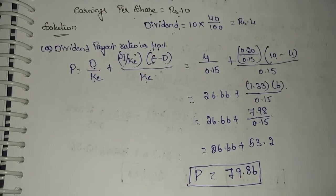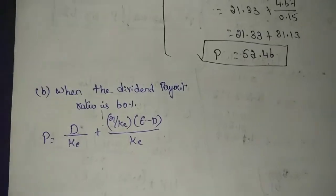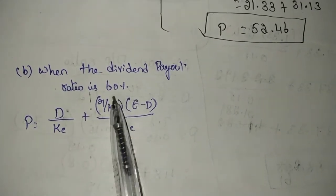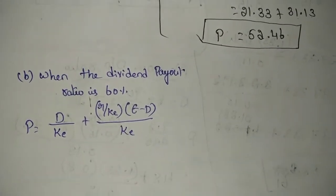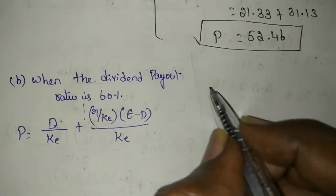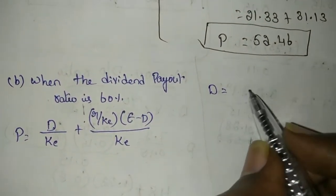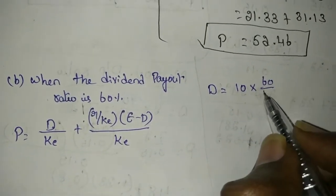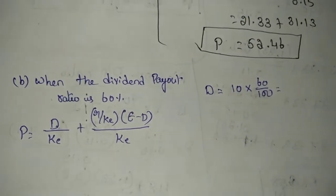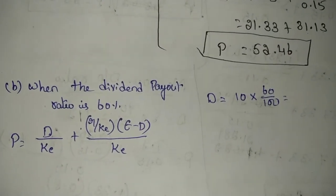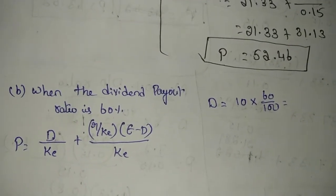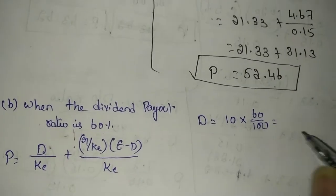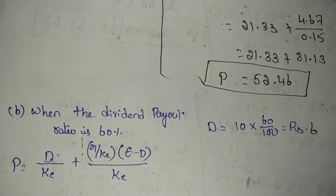Now let us calculate the value at dividend payout ratio of 60%. We will use the same formula, but we need the value of D. Dividend equals earnings per share 10 rupees, into 60 divided by 100, giving us 6 rupees as the dividend value.